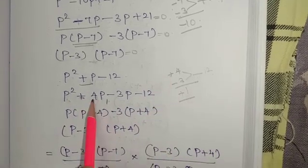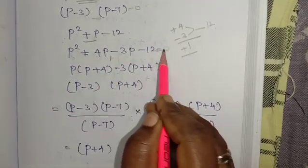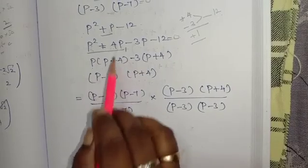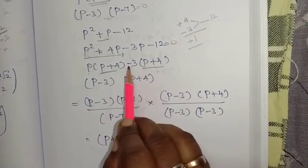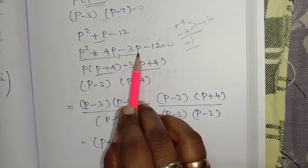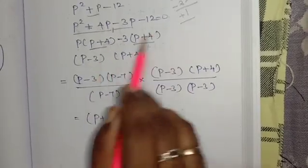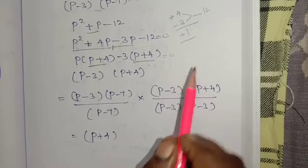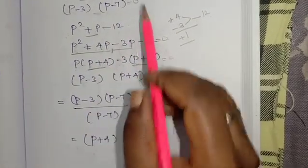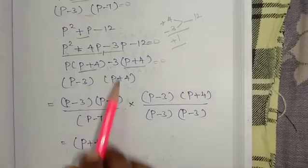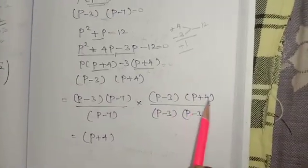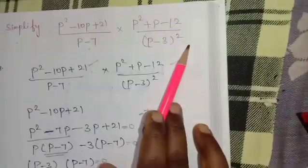Now p squared plus 4p minus 3p minus 12, is equal to 0. p is the common. p plus 4. p into p, p squared. p into 4, 4p. That is p plus 4. Minus 3 is common. Minus 3 into p plus 4. This time p minus 3, p plus 4, by p minus 3, 2 squared.